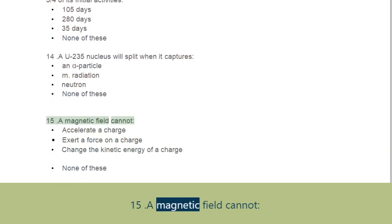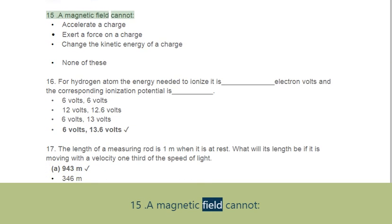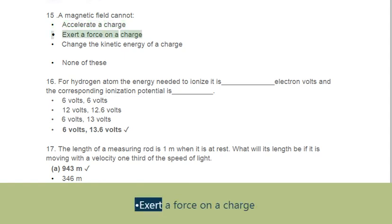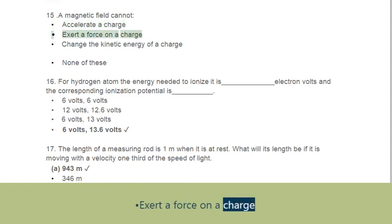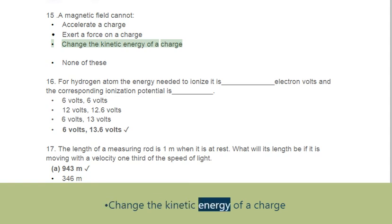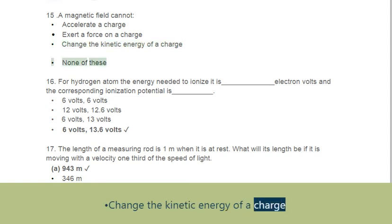Question 15: A magnetic field cannot. Options: A. Accelerate a charge, B. Exert a force on a charge, C. Change the kinetic energy of a charge, D. None of these.